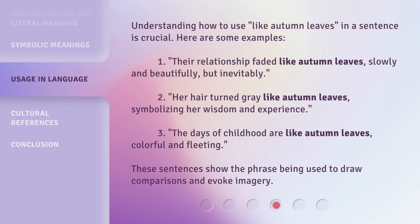Understanding how to use 'like autumn leaves' in a sentence is crucial. Here are some examples. First: 'Their relationship faded like autumn leaves — slowly and beautifully, but inevitably.' Second: 'Her hair turned gray like autumn leaves, symbolizing her wisdom and experience.' Third: 'The days of childhood are like autumn leaves — colorful and fleeting.' These sentences show the phrase being used to draw comparisons and evoke imagery.